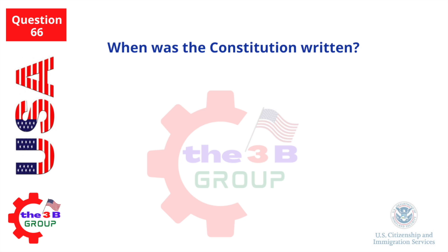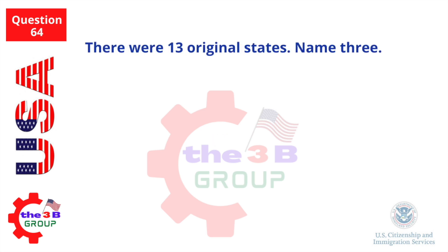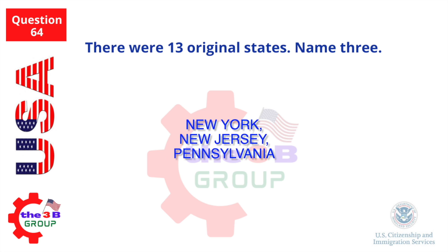When was the Constitution written? 1787. There were 13 original states. Name three. New York, New Jersey, Pennsylvania.